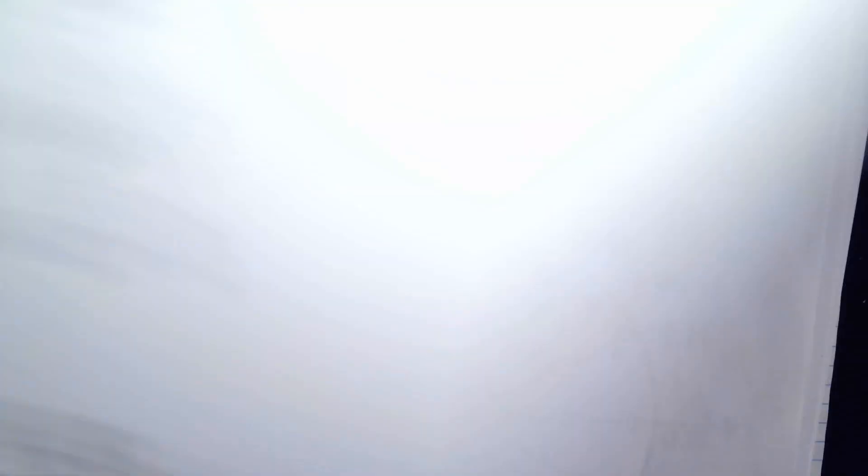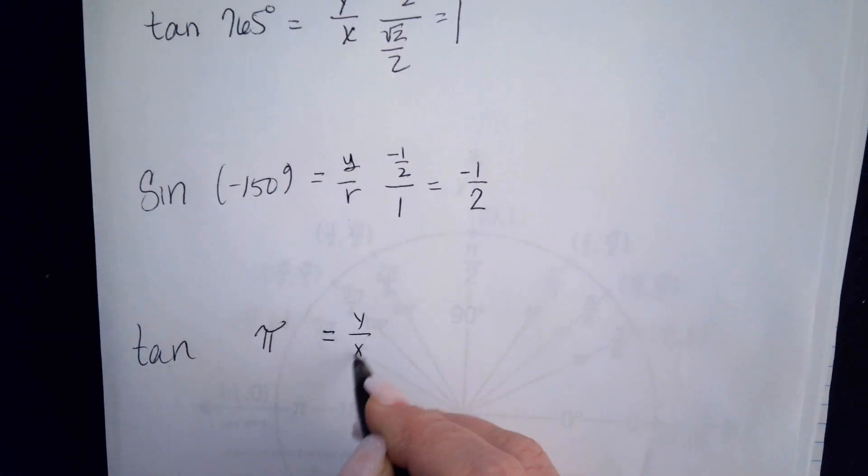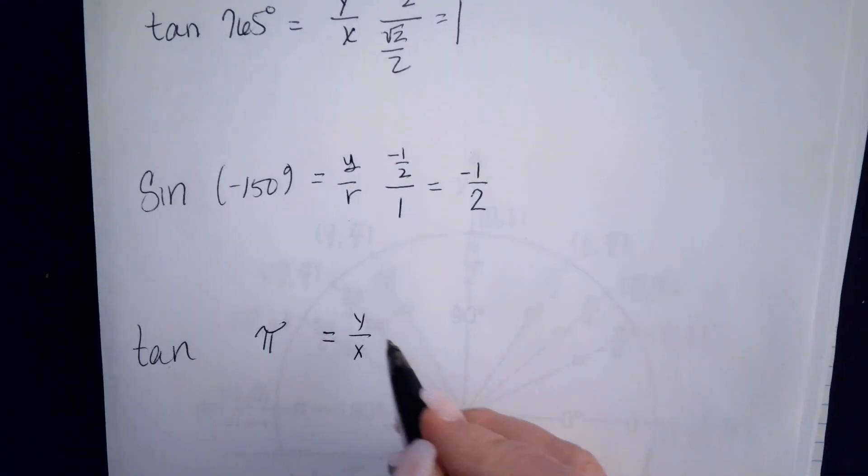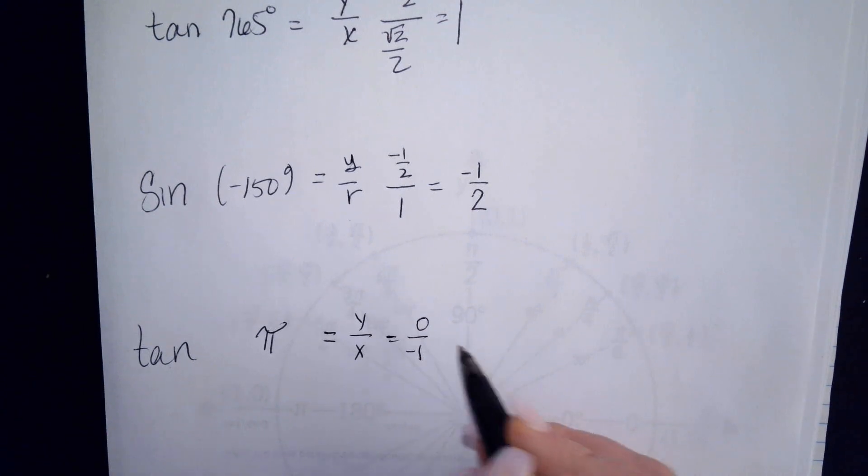This is your x value and this is your y value. Now, remember, tangent is y over x. So we're going to have 0 over negative 1. 0 over negative 1 is 0. So the tangent of pi is 0.